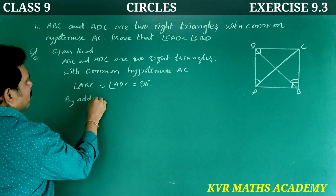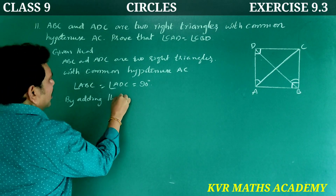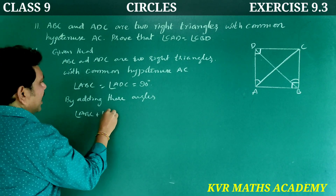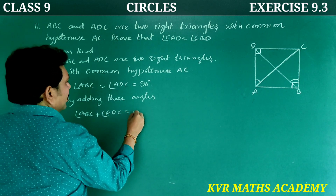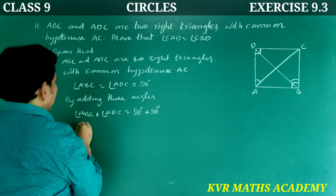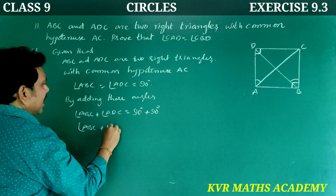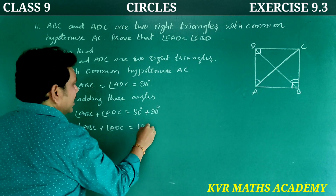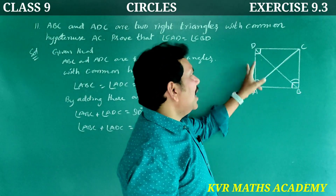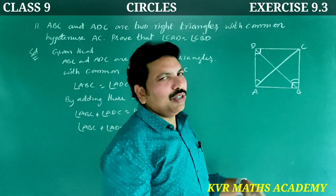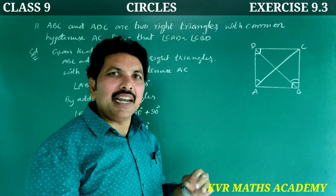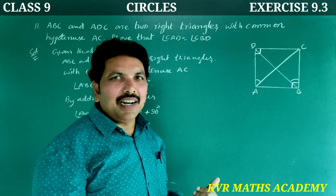By adding these angles: angle ABC plus angle ADC equals 90 plus 90, so angle ABC plus angle ADC is equal to 180 degrees. In a quadrilateral in which the sum of opposite angles is supplementary, then it will be a cyclic quadrilateral.